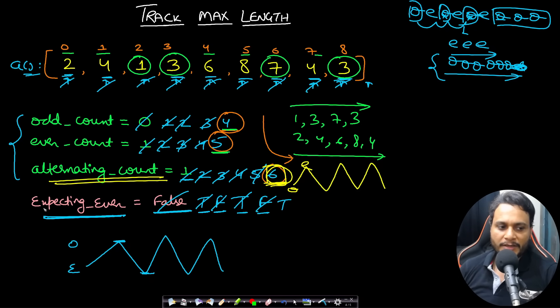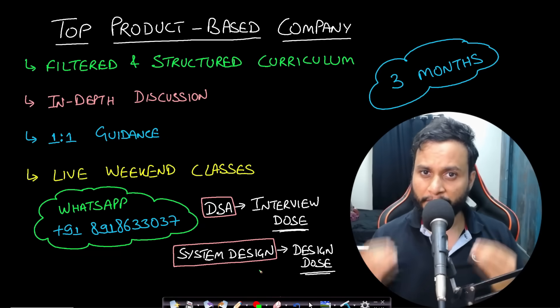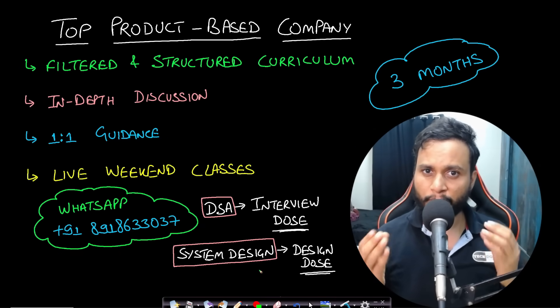Since we iterated through the entire array exactly one time using four variables, the time complexity is O(n) and space complexity is O(1).